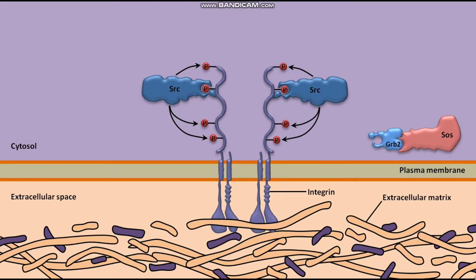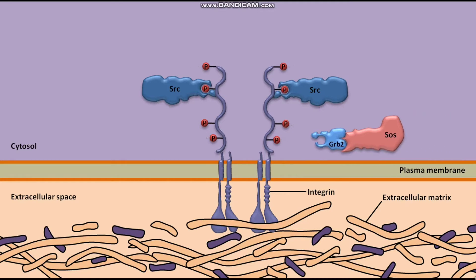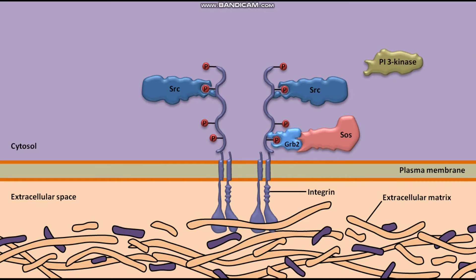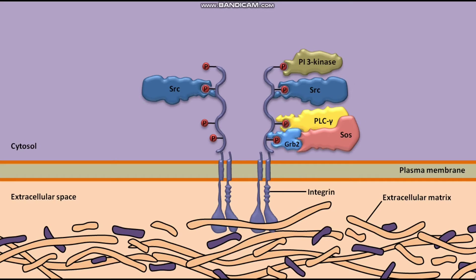FAK phosphotyrosines bind to a variety of downstream signaling molecules like the GRB2-SOS complex. This binding leads to the activation of PI3 kinase and phospholipase C-gamma (PLC-gamma). Recruitment of the SOS guanine nucleotide exchange factor leads to RAS activation.